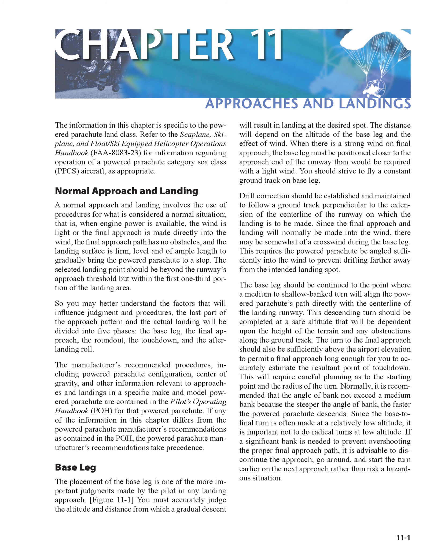You should strive to fly a constant ground track on the base leg. Drift correction should be established and maintained to follow a ground track perpendicular to the extended centerline of the runway on which the landing is to be made. Since the final approach and landing will normally be made into the wind, there may be somewhat of a crosswind during the base leg. This requires the powered parachute be angled sufficiently into the wind to prevent drifting farther away from the intended landing spot.